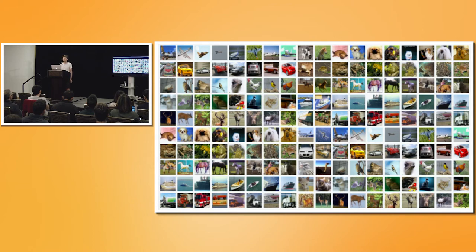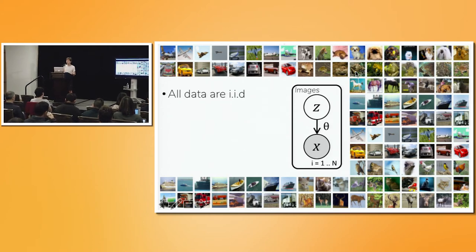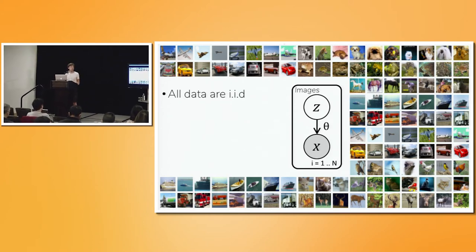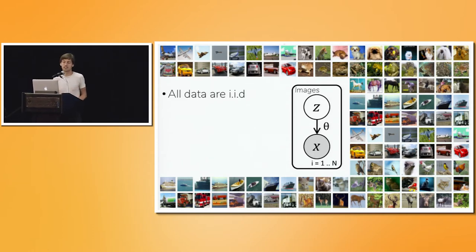If we have enough data, we might want to parameterize this generative model as a neural network and learn the parameters. So we could assume that every image, x, is an independent sample from the same distribution, and we could describe that distribution via some latent variable, z. So for each image, z might be a vector, and then we have a decoder network parameterized by theta, which transforms z into the image, x.